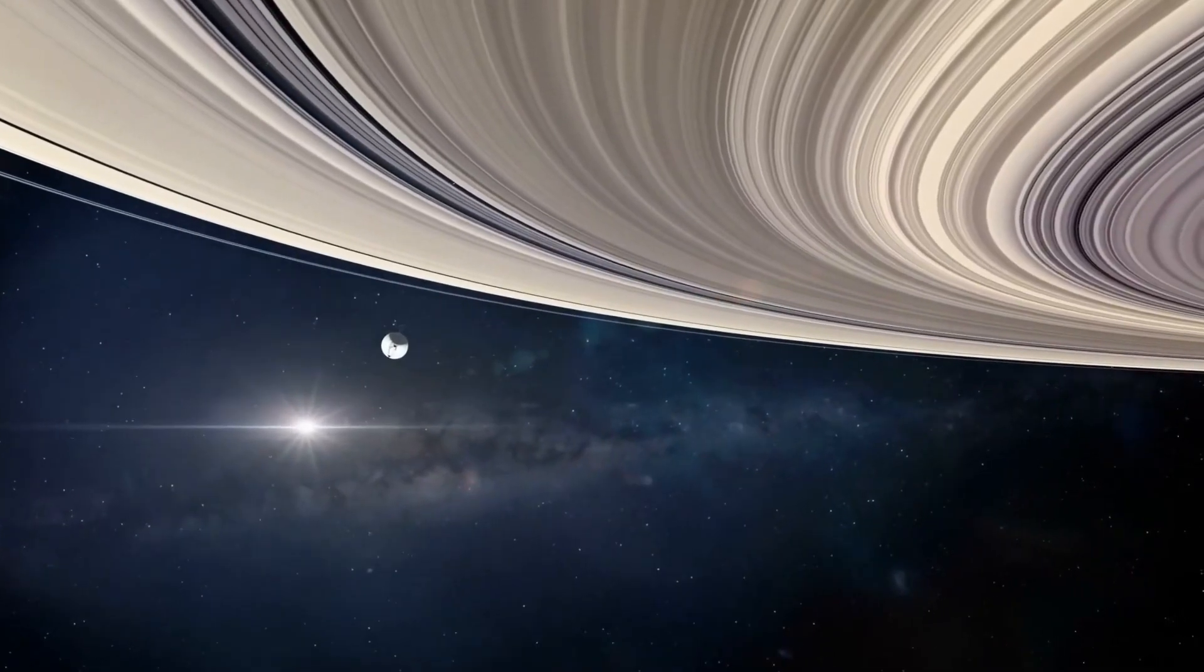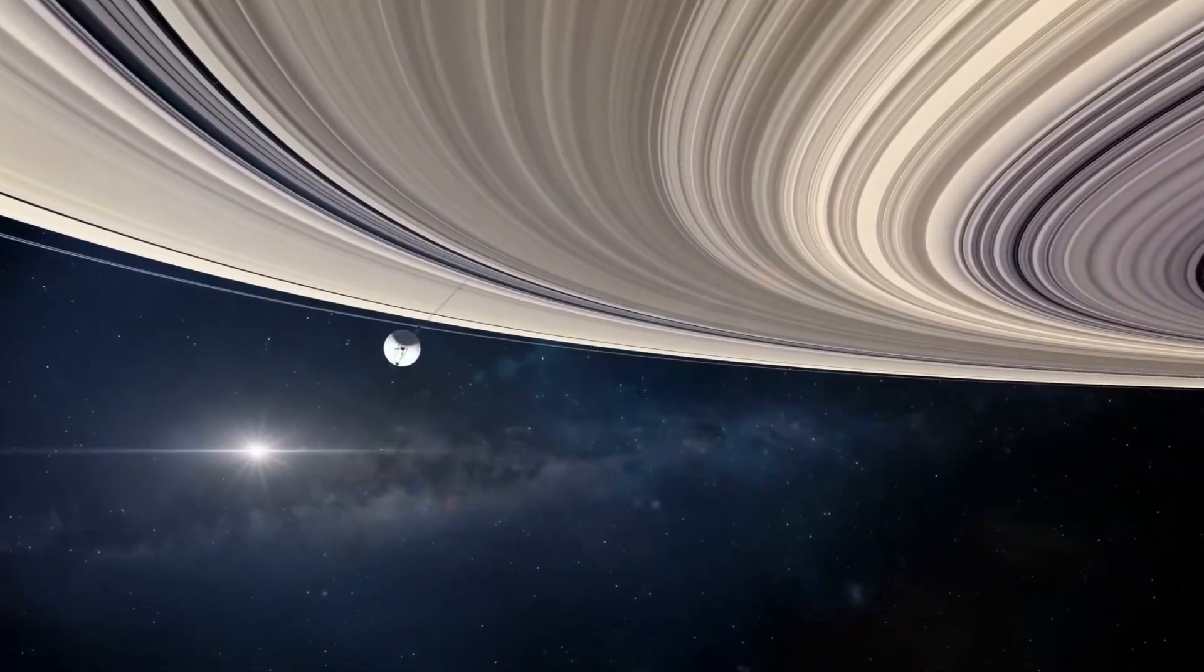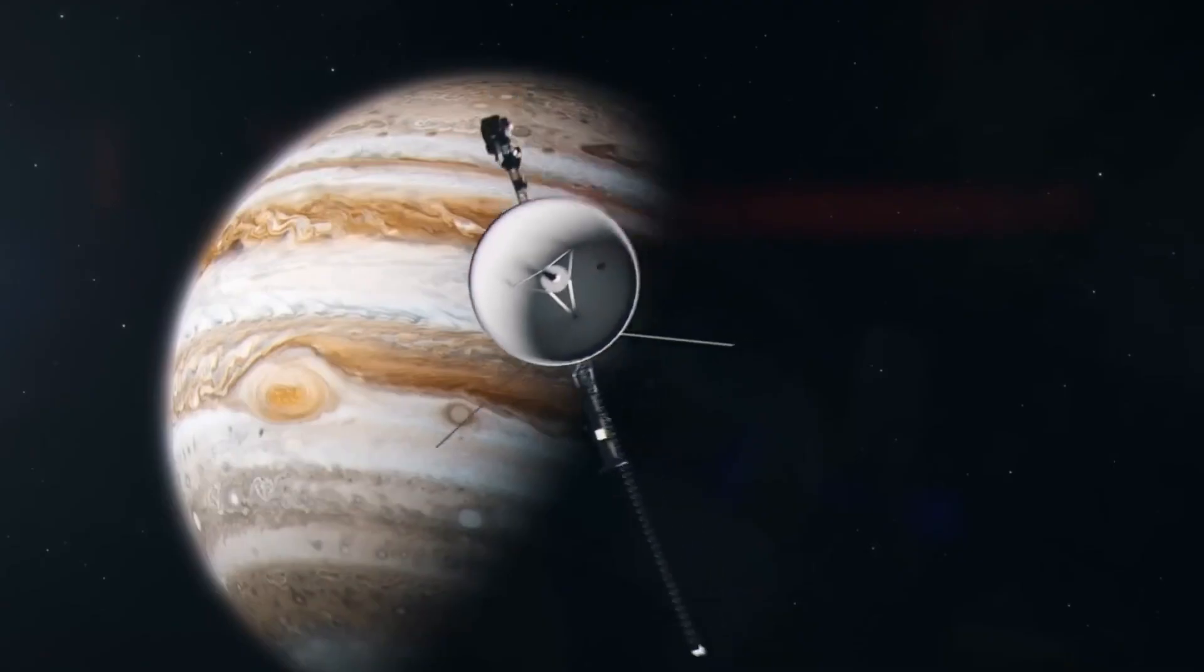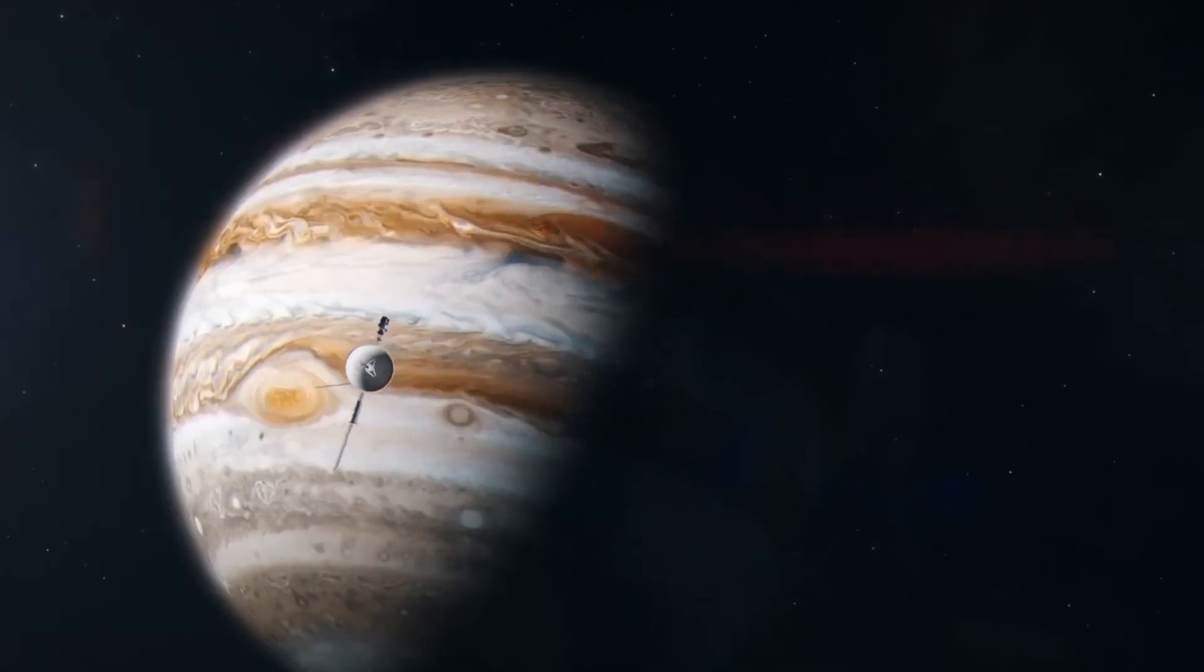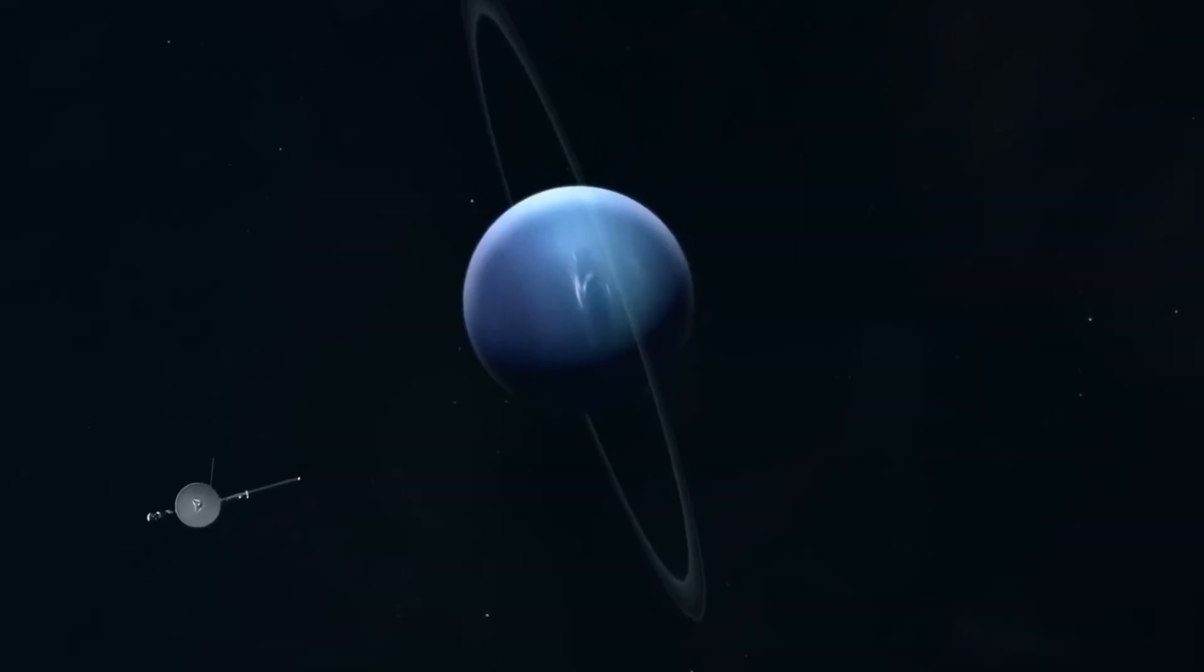But in the fall of 2023, something unexpected happened. Voyager 1 suddenly transmitted a baffling sequence of ones and zeros. The message was so cryptic it couldn't be interpreted. This wasn't the first strange report from the spacecraft either.